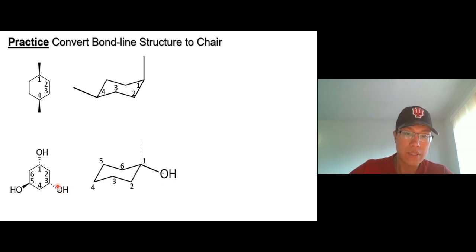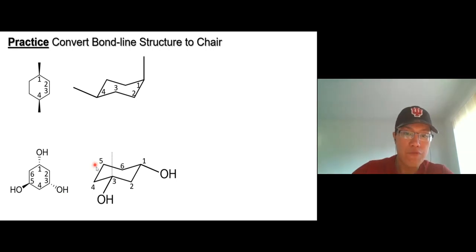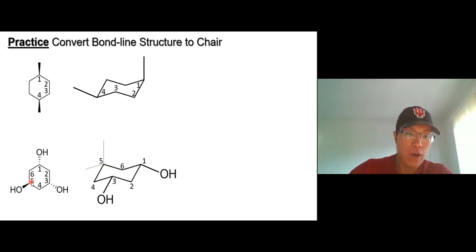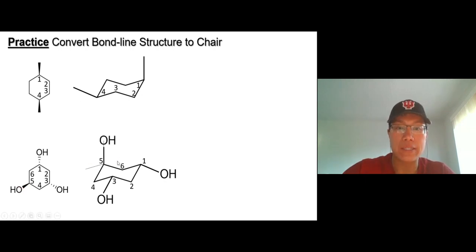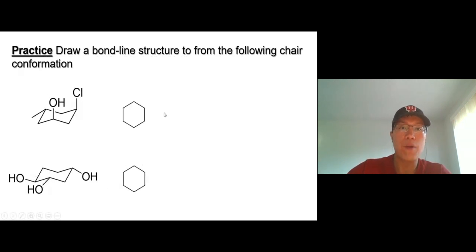At carbon three there's also a hydroxyl group pointing down. On carbon three you have two options: axial is up, equatorial is down. Since it's pointing down, keep it down — equatorial. Last one, carbon five: axial is up, equatorial is down. On the bond-line structure the hydroxyl group is up, so keep it up — that's axial. And that's the 3D structure; nothing is flat in real life.